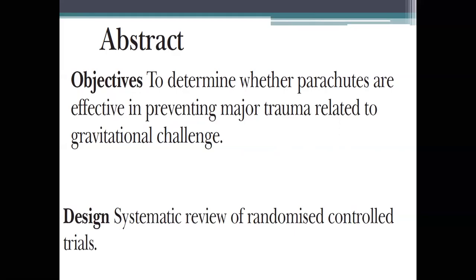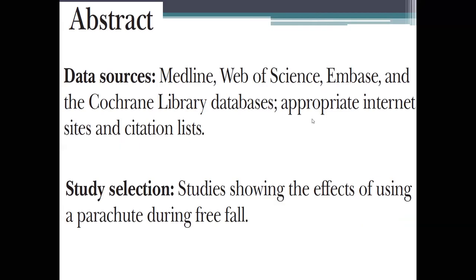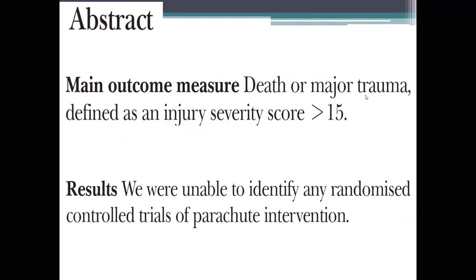They searched Medline, Web of Science, EMBASE, Cochrane Library databases, and citation lists looking at studies on the effects of using a parachute during free fall. The major outcome would be death or major trauma defined by an Injury Severity Score greater than 15. Ironically, when they did this study, they were unable to identify any randomized control trials of parachute intervention — no one has ever done an RCT to see if parachutes work.